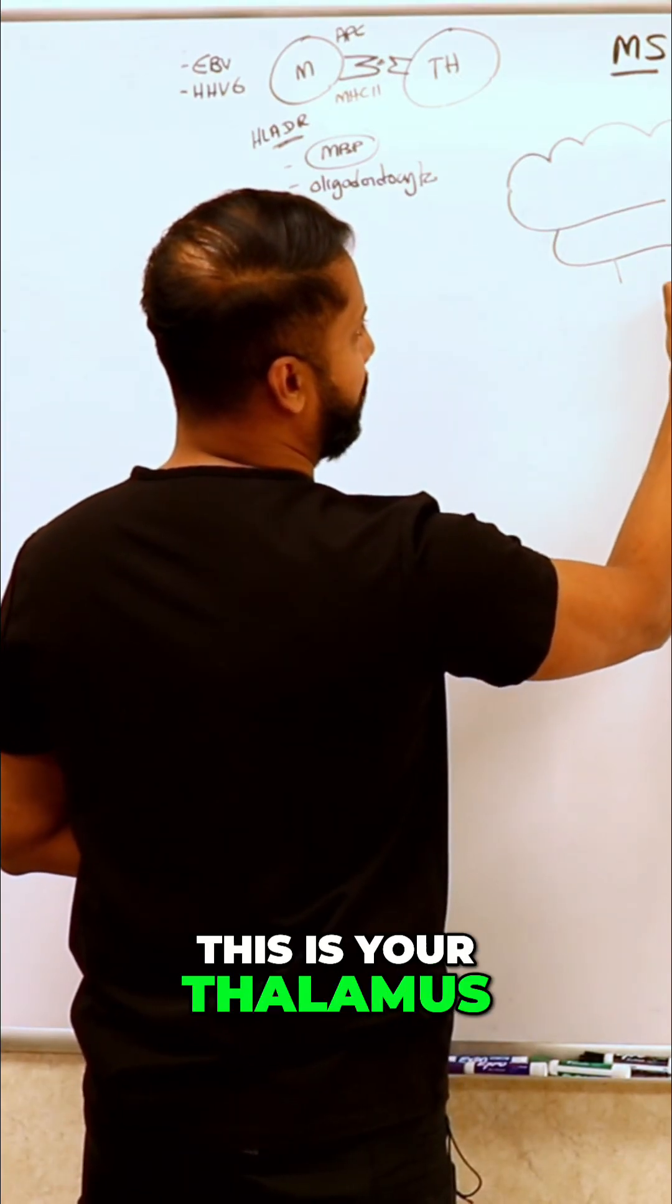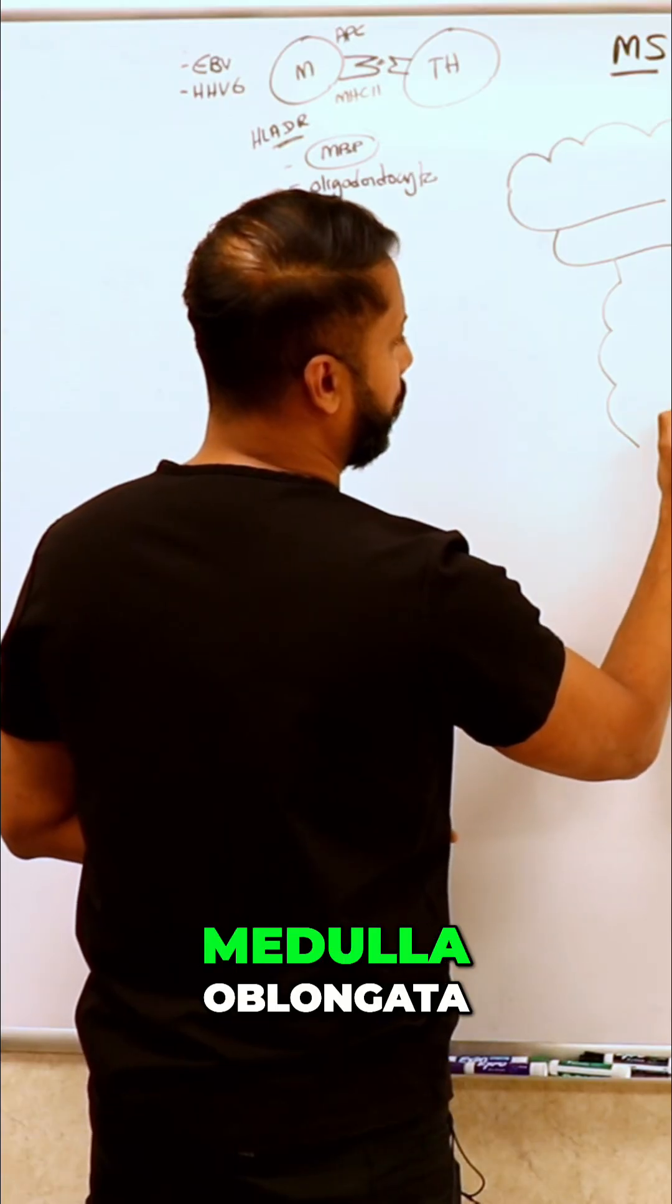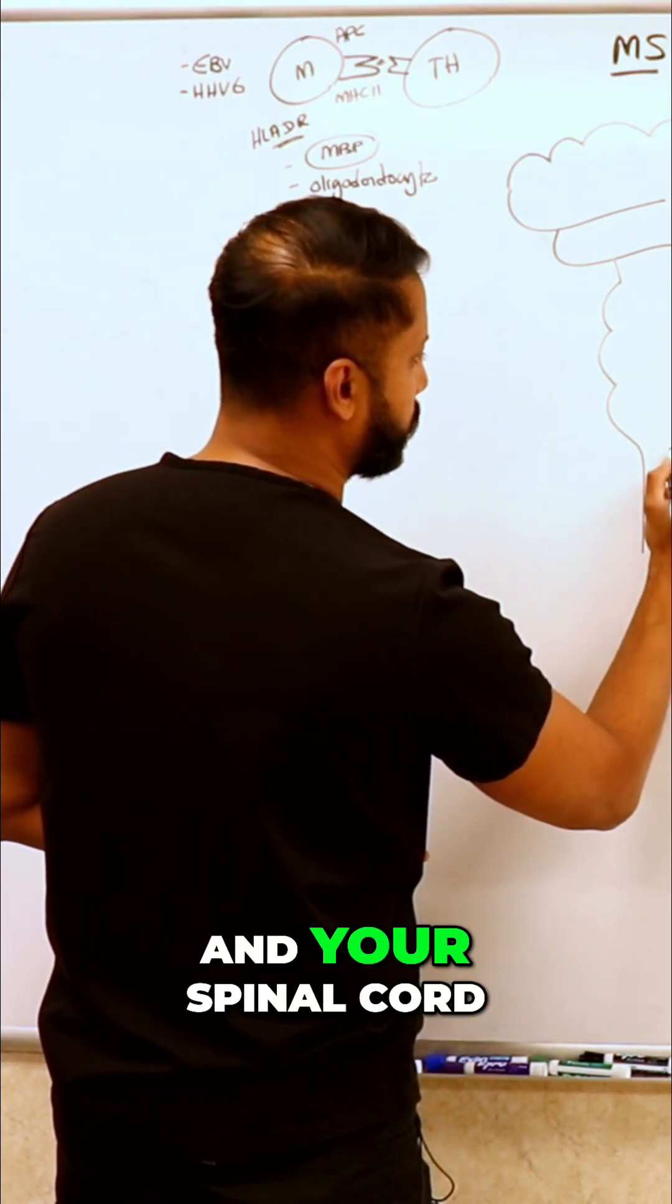This is your thalamus, midbrain, pons, medulla oblongata, and your spinal cord.